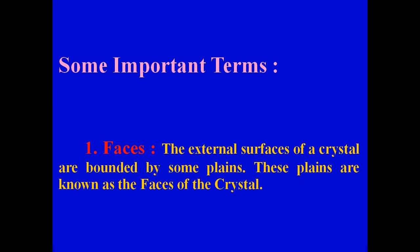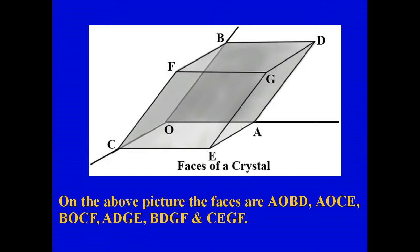Now we discuss some important terms in crystallography. Faces: the external surfaces of a crystal are bounded by some planes; these planes are known as the faces of the crystal. In the picture, OAECVDGF is a typical crystal. The faces are AOBD, AOCE, BOCF, ADGE, BDGF, and so on.